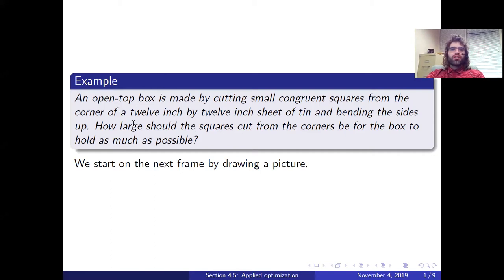Let's just read it. We are creating a box by taking a square sheet of tin, cutting the corners off, and bending the sides up. And we want the box to hold as much as possible. In other words, we are trying to maximize the volume.